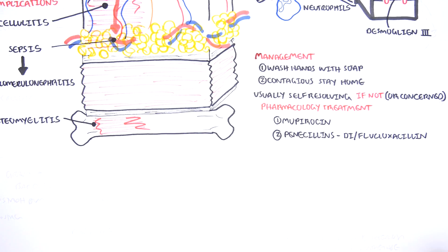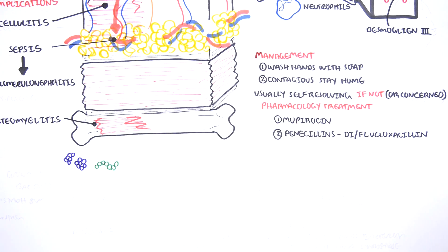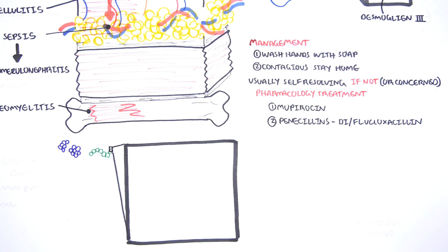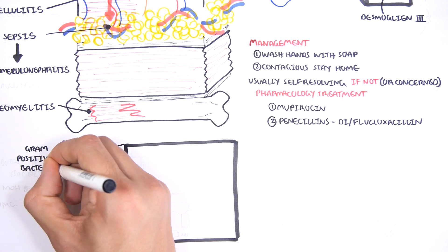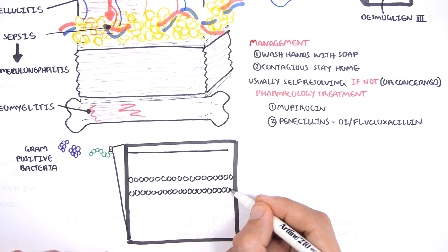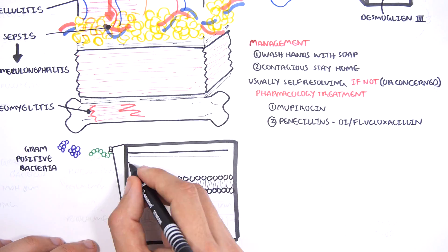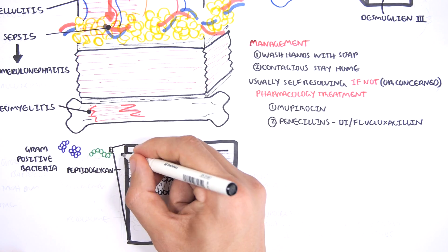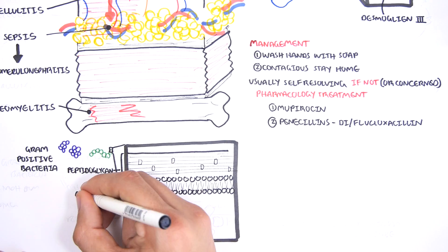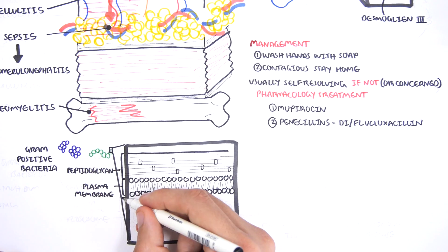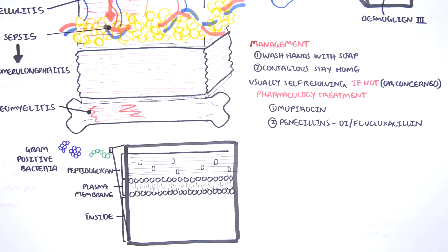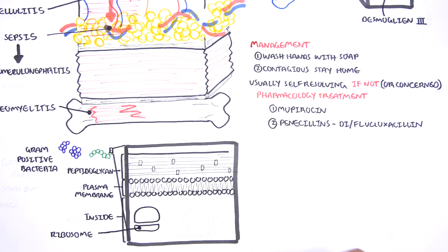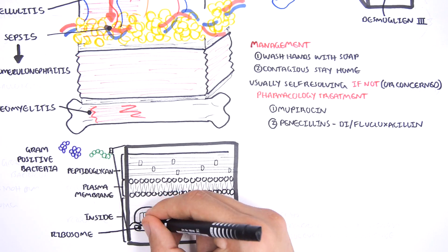Let's now see how these antibiotics work. Remember, the main causative organisms of impetigo are gram-positive bacteria, such as Staphylococcus aureus and group A streptococcus. Gram-positive bacteria have a thick outer peptidoglycan layer and under it, a plasma membrane. Within the bacteria, you also have ribosomes, which are these machinery workshops which make protein. They make protein by reading RNA, specifically mRNA, and by reading mRNA, they are able to produce proteins.